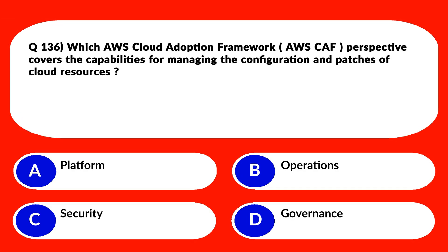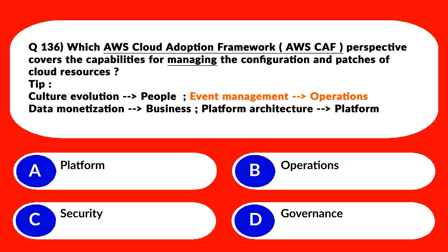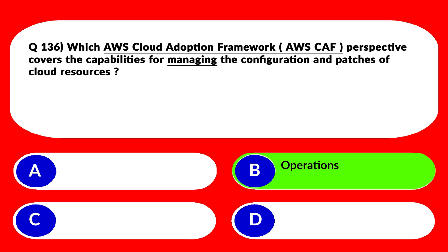We have another question related to AWS Cloud Adoption Framework. We've seen several questions on this in previous parts, so I'll bring up the tip once again. As per the question, the keyword is 'manage,' and option B — that is Operations — is the correct answer. Because if you look at event management, the word 'manage' is the key. Hence Operations is the correct answer. We'll reject the rest and lock it.